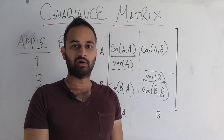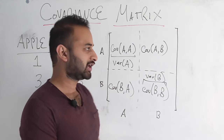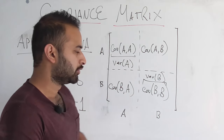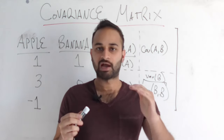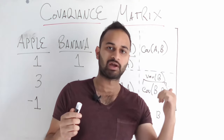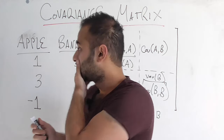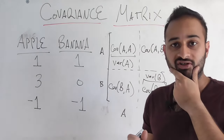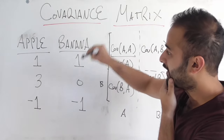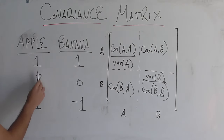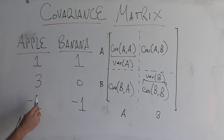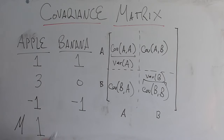Now let's go through the work of actually filling in these quantities. The first thing we need is the mean of the apple and banana variables. The mean of the apple variable: adding 1, 3, and -1 gives 3, divided by 3 is 1. The mean of the banana variable is 0 — you can verify that yourself.